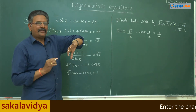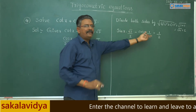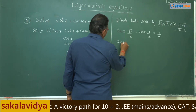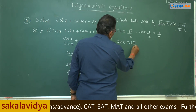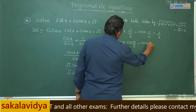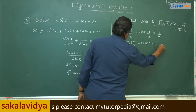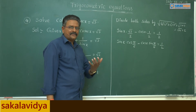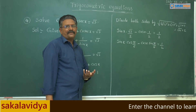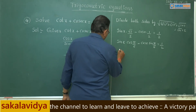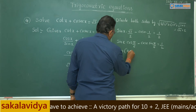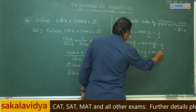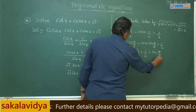We get sin x times root 3 by 2 minus cos x times 1 by 2 equals 1 by 2. Now appropriate trigonometric ratios are written: root 3 by 2 is cos 30 degrees and 1 by 2 is sin 30 degrees. So this can be written as sin x times cos 30° minus cos x times sin 30° equals 1 by 2. This is in the form of sin(a minus b), so we can write sin(x minus π/6) equals 1 by 2, which is equivalent to sin of π/6.